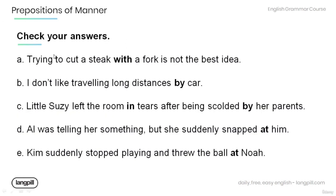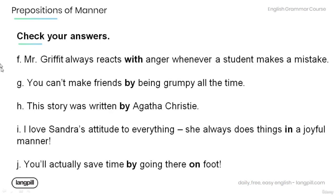Let's check your answers. A. Trying to cut a steak with a fork is not the best idea. B. I don't like traveling long-distance by car. C. Little Susie left the room in tears after being scolded by her parents. D. Al was telling her something, but she suddenly snapped at him. E. Kim suddenly stopped playing and threw the ball at Noah. F. Mr. Griffith always reacts with anger whenever a student makes a mistake. G. You can't make friends by being grumpy all the time. H. This story was written by Agatha Christie. I. She always does things in a joyful manner. J. You'll actually save time by going there on foot. Thank you for watching this tutorial.